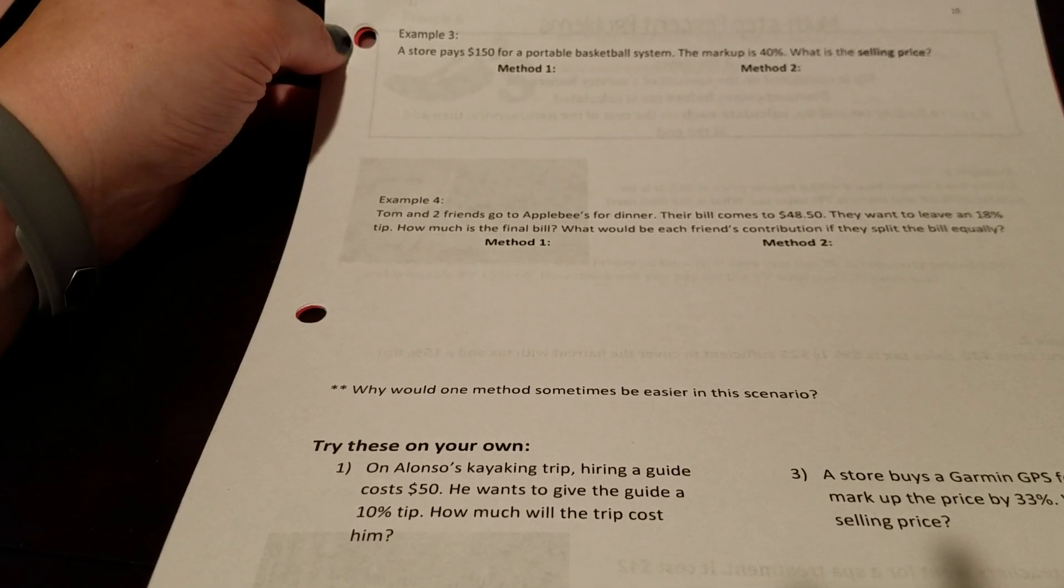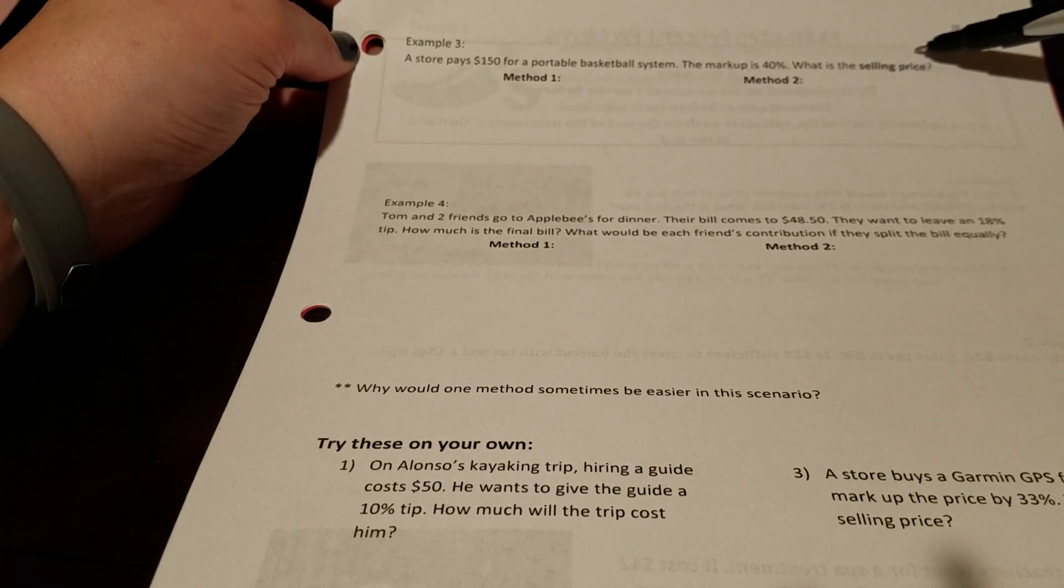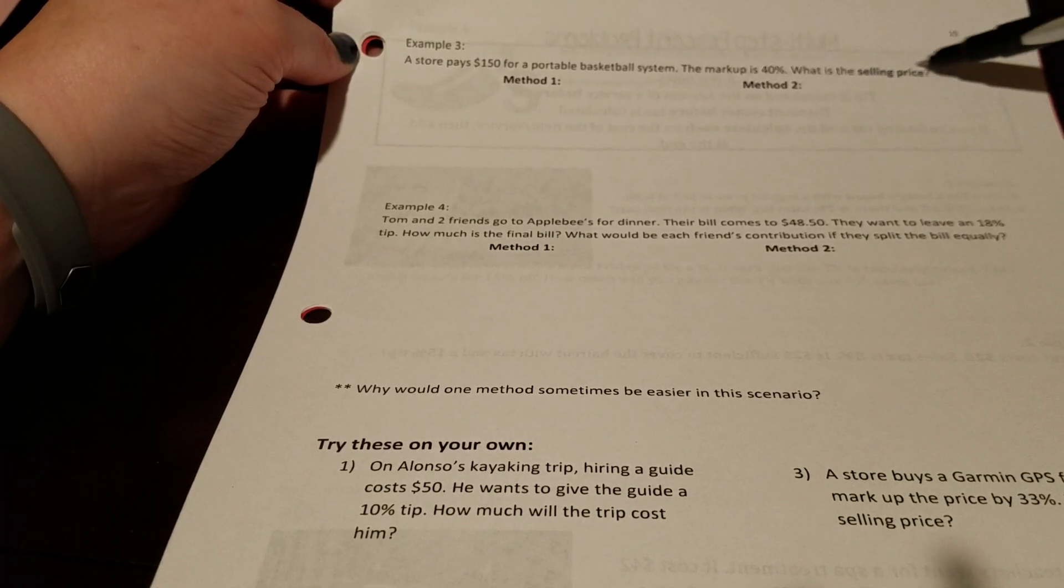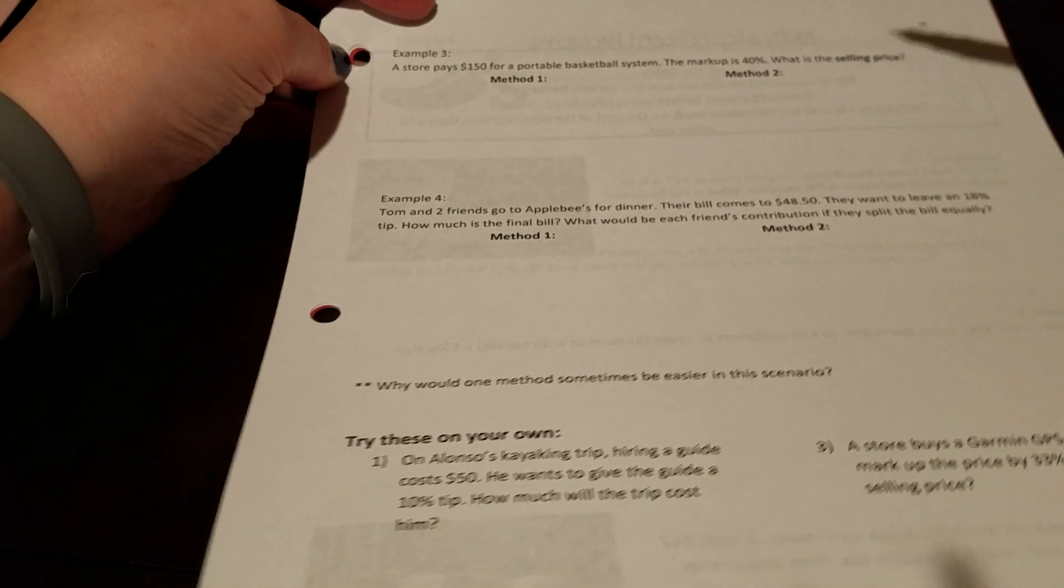In example three, a store pays $150 for a portable basketball system. The markup is 40%. What's the selling price? So the selling price is what we call the price that the store sells it to you for after they take care of the markup.